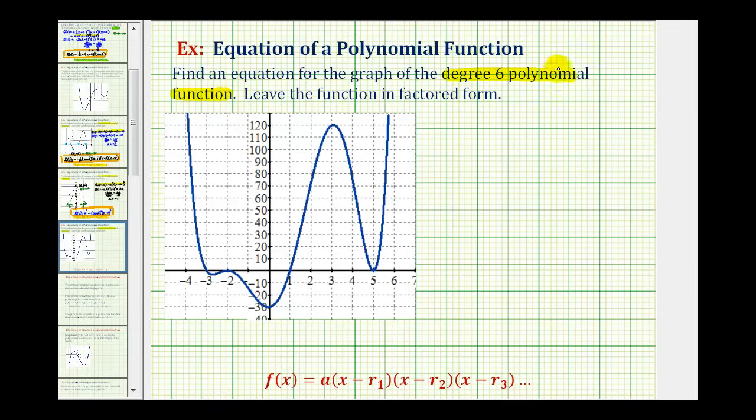Because the polynomial is degree six, we know there is at most six real rational zeros or roots. Graphically, we can find these by analyzing the x-intercepts of our graph.